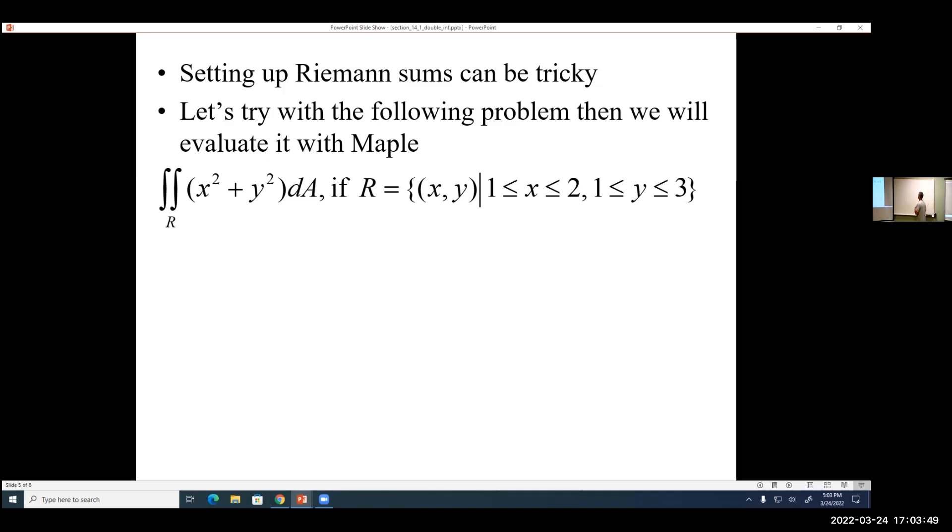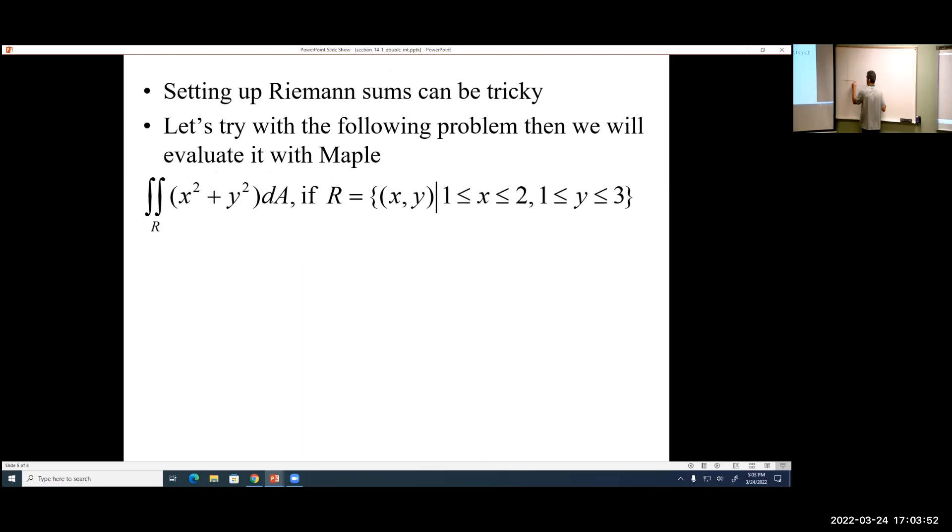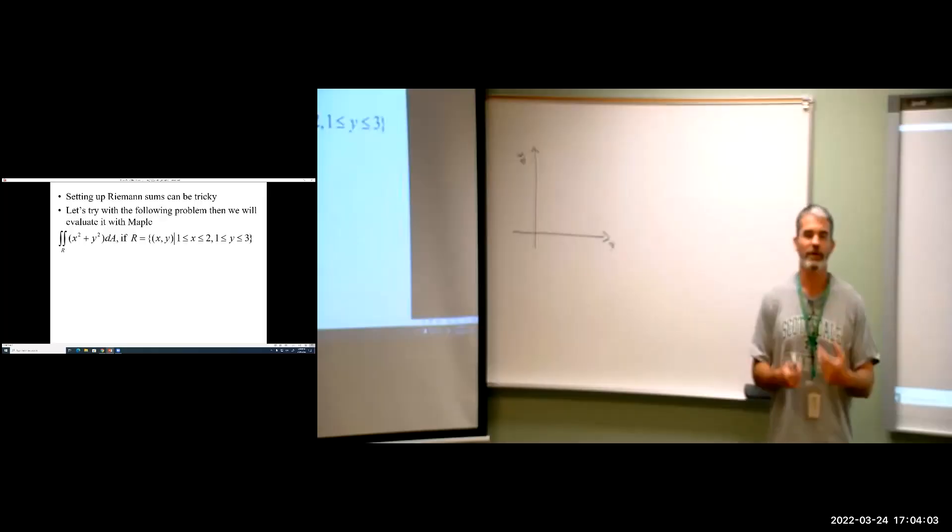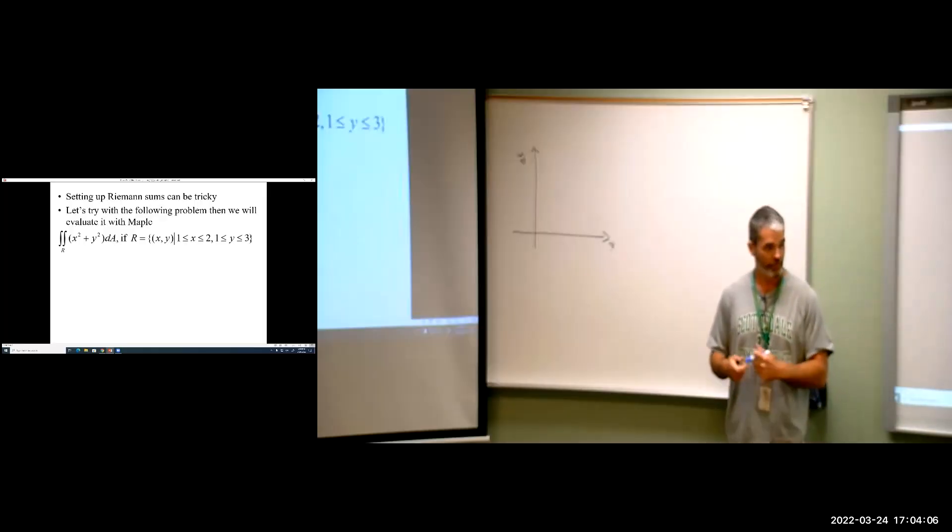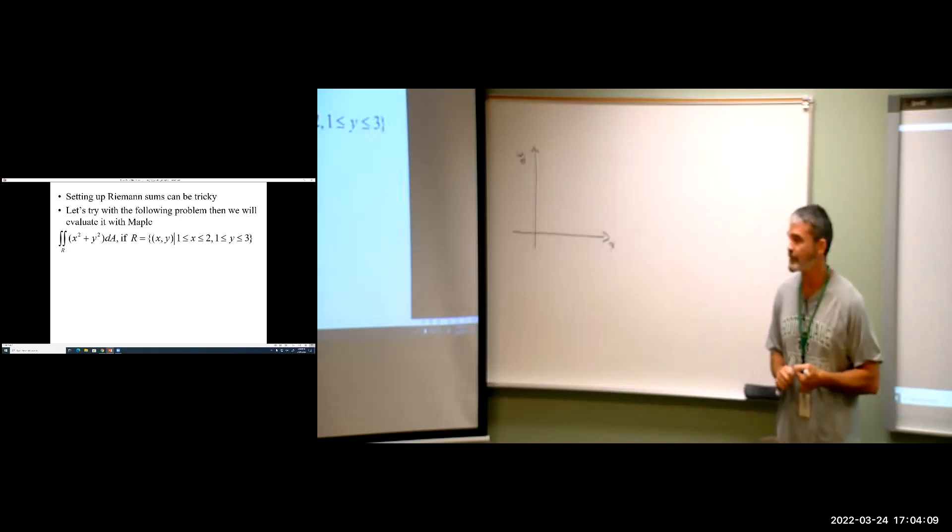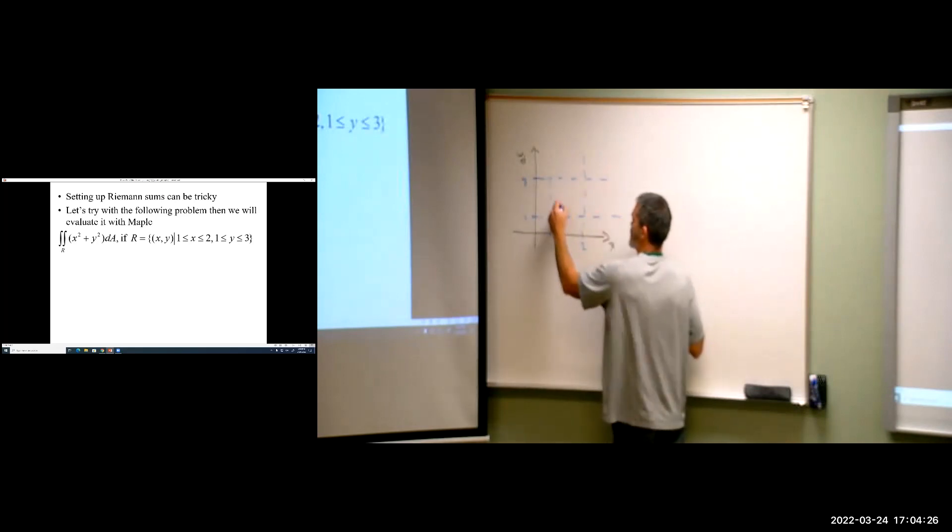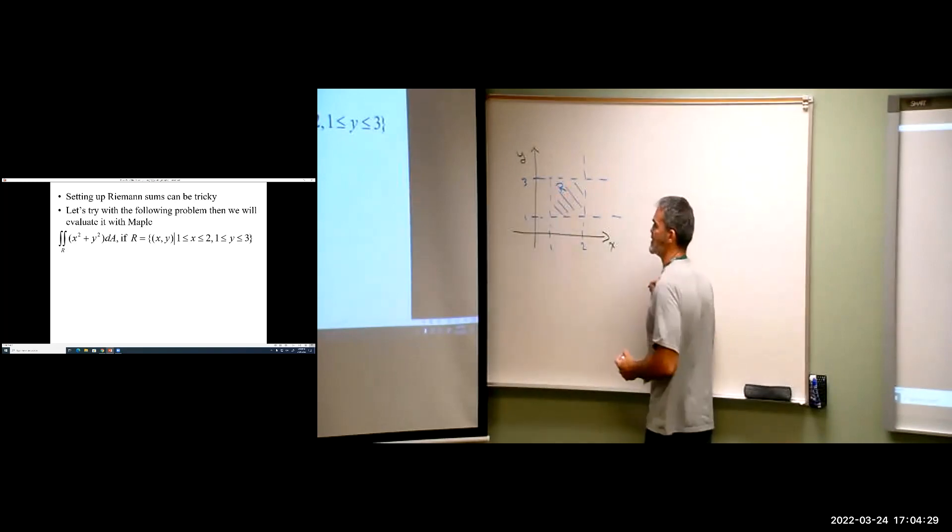So one of the things we'll look at today is actually sketching our region of integration. This is being our X, this is being our Y, because we can do this for double integrals. When we get to triple, it's going to be a little trickier, but that's why we want to spend the time getting double integrals down, so that when we get to triple integrals, it's only adding an extra layer. So we're seeing that X goes from 1 to 2, and Y is going from 1 to 3.